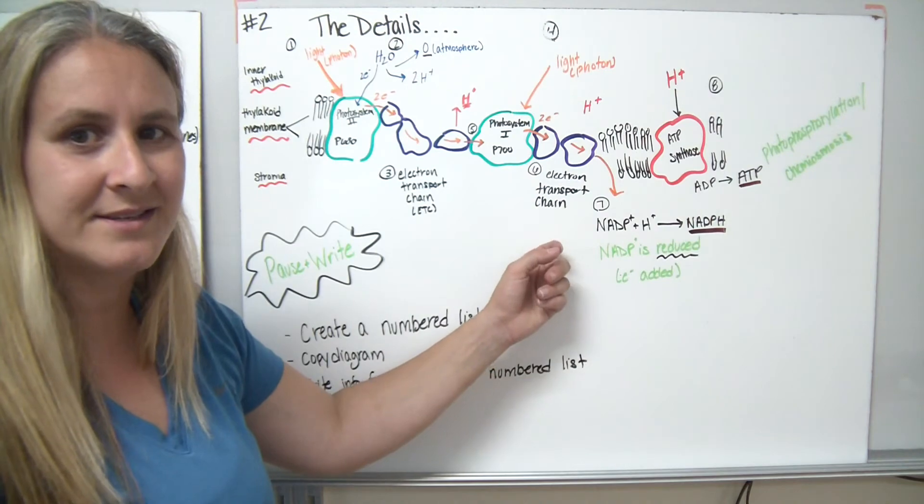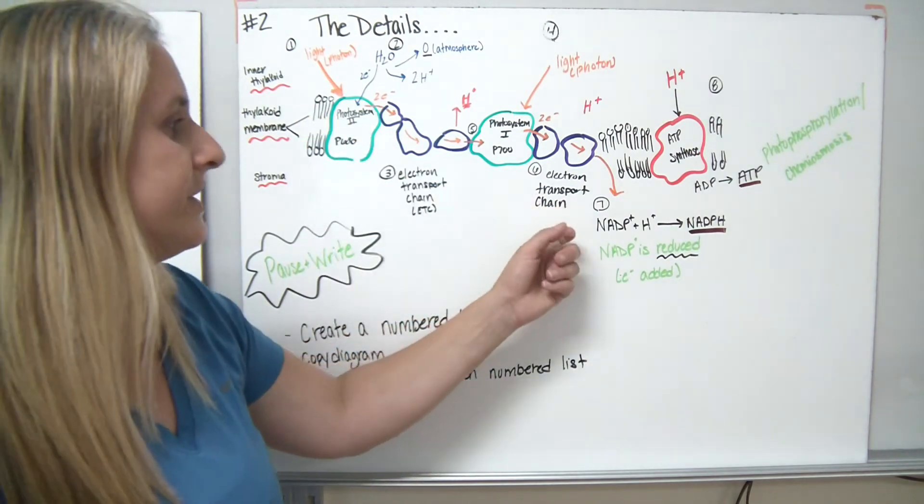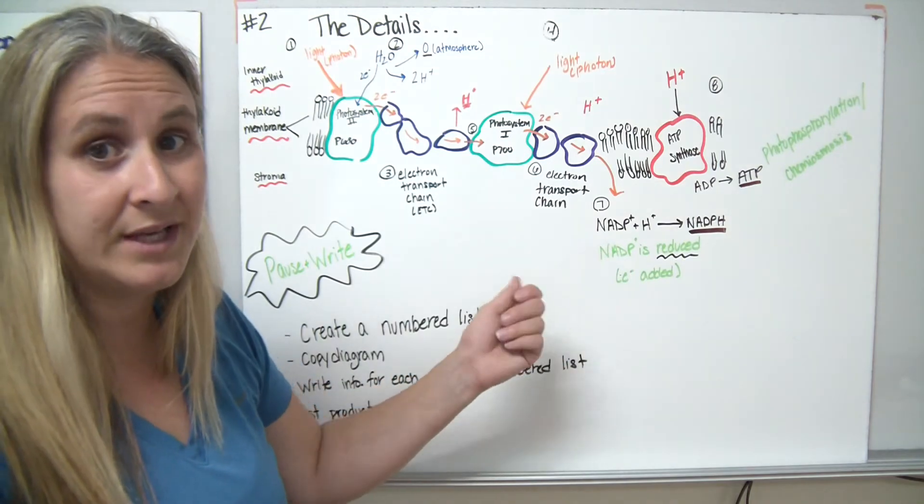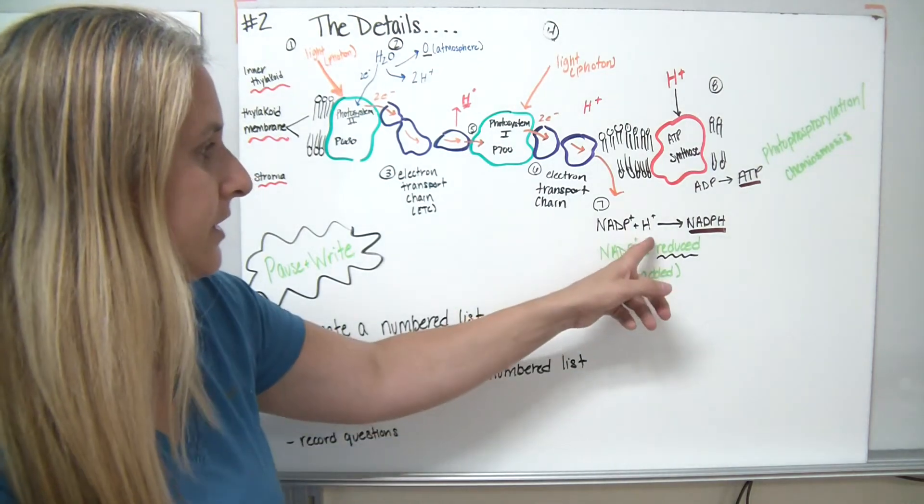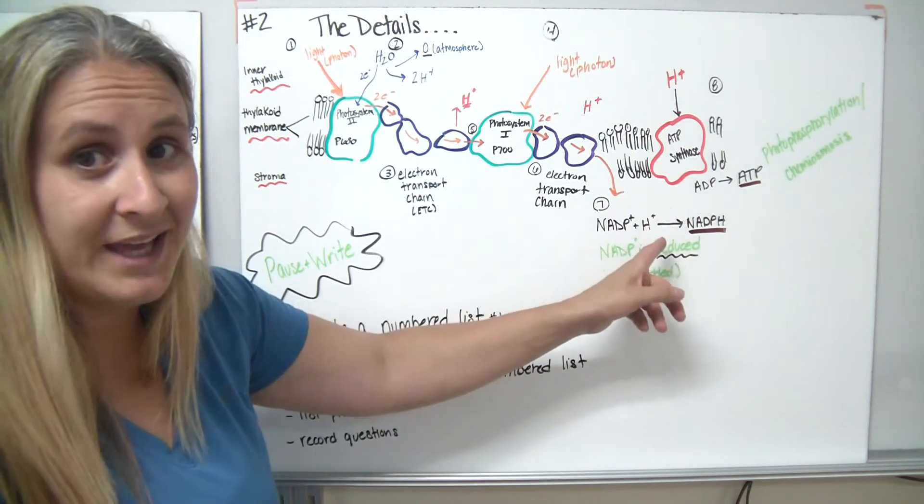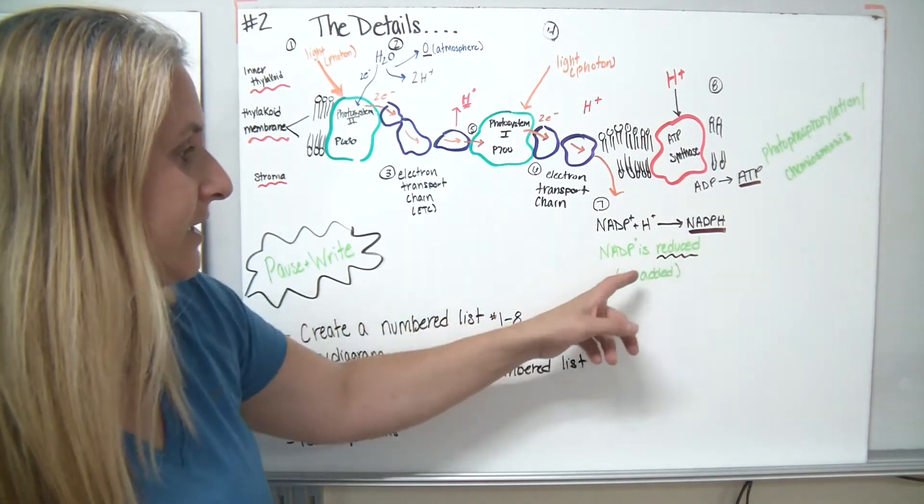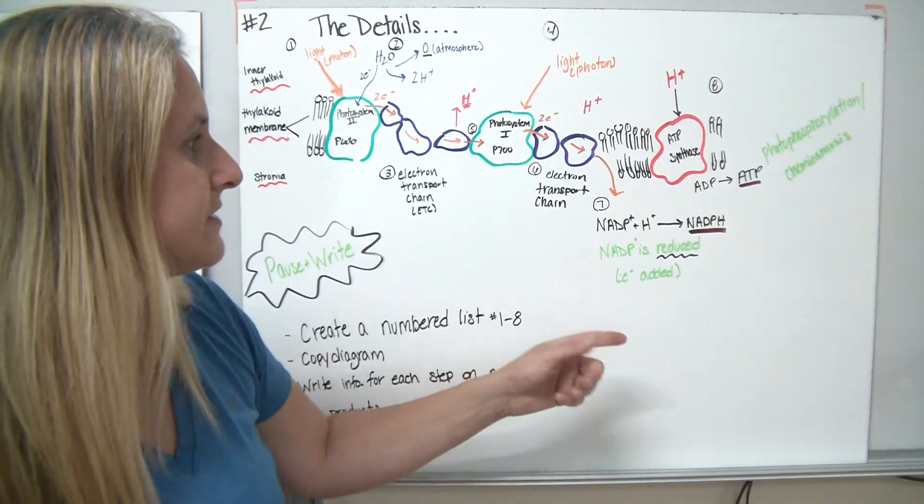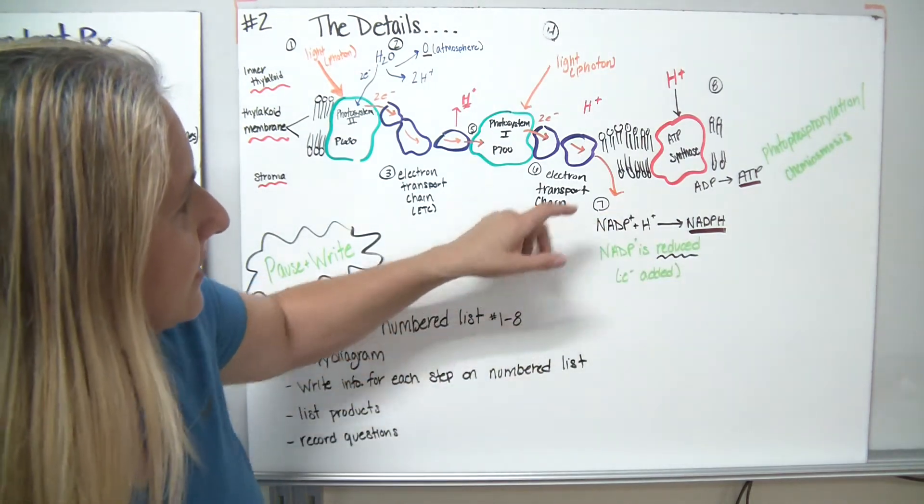They get dumped out onto this side of the thylakoid into the stroma. And now we're going to use that NADPH carrier molecule. And we're going to have NADP join with the H's to form NADPH. It's considered to be reduced because we added electrons or gained electrons.